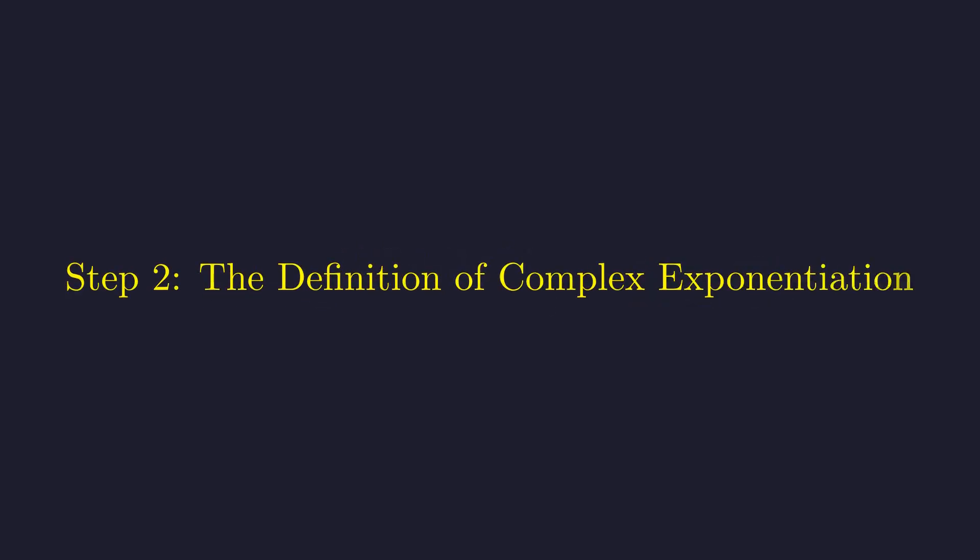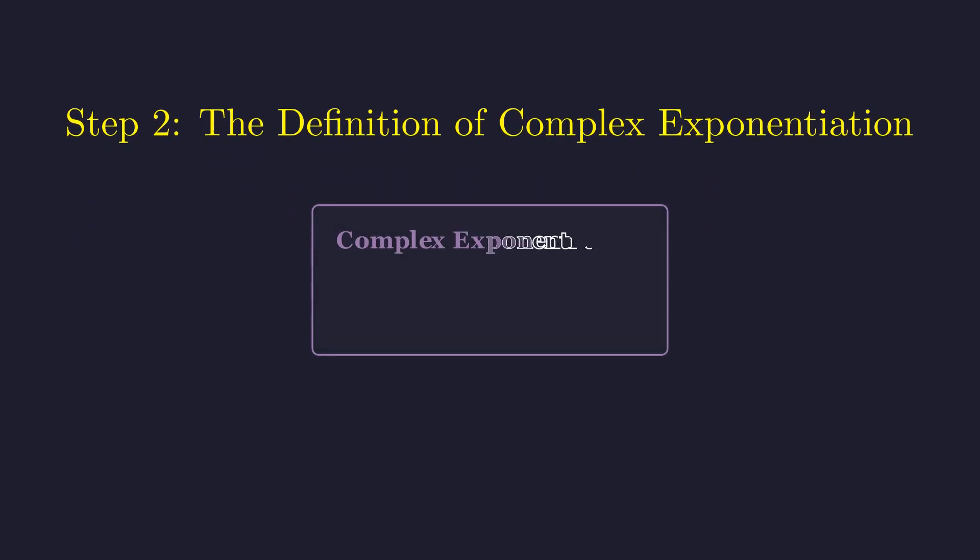Step 2. Now, you might think we can just use normal exponent rules, but complex exponentiation requires a more careful definition. For complex numbers, z to the power w is defined as e to the power of w times the natural log of z.